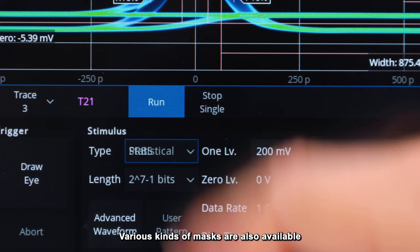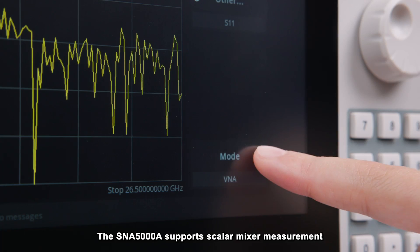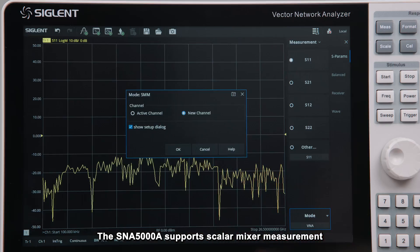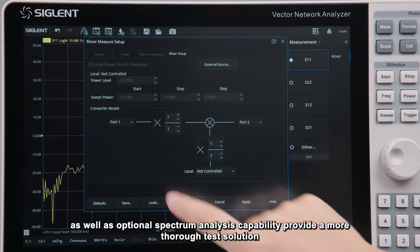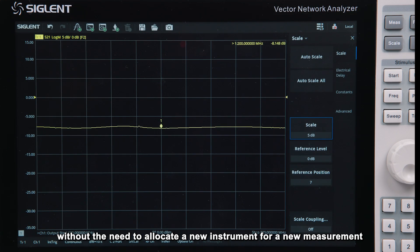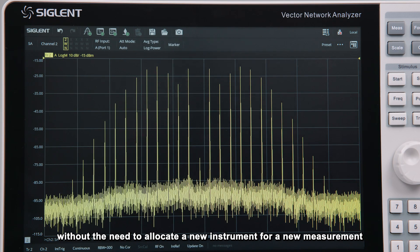Various kinds of masks are also available. The SNA 5000A supports scalar mixer measurement, as well as optional spectrum analysis capability, providing a more thorough test solution without the need to allocate a new instrument for every new measurement.